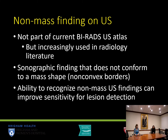Non-mass finding on ultrasound is not part of our current BI-RADS ultrasound atlas, but it is increasingly being used in the radiology literature. What it means is a sonographic finding that does not conform to a mass shape — in other words, it has non-convex borders. The ability to recognize non-mass ultrasound findings can improve our sensitivity for lesion detection.